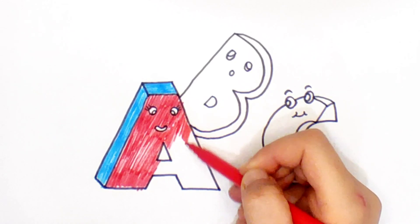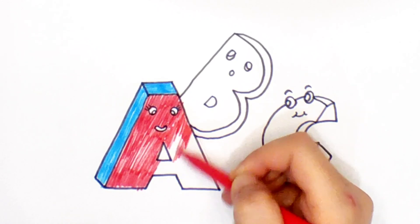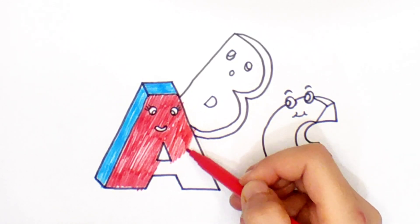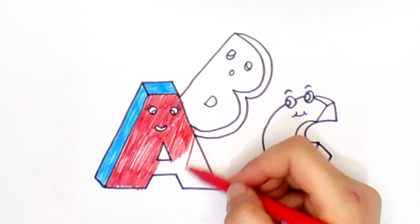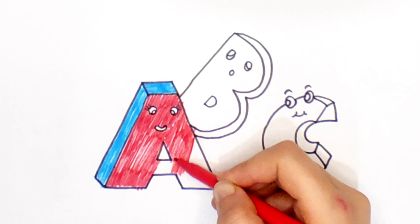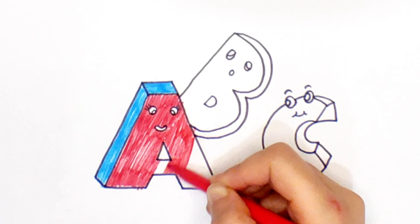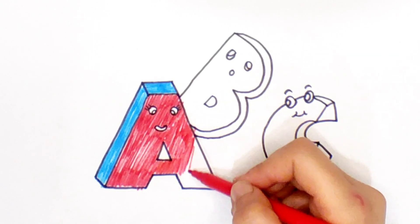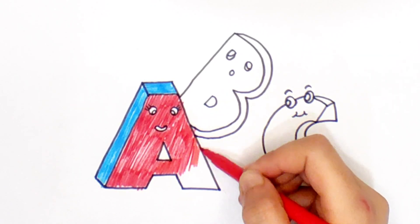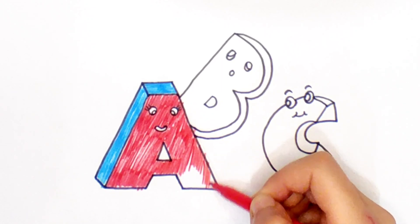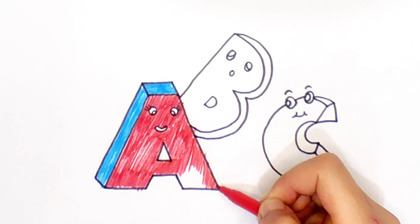P, Q, R, S, T, U, V, W, X, Y, and Z. Now I know my ABCs. Next time, won't you sing with me?